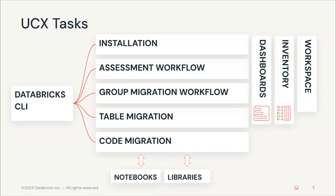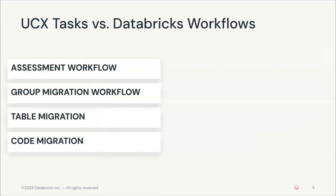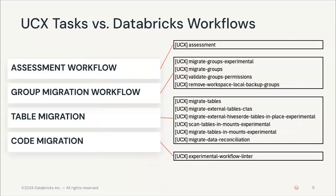UCX will also generate a set of dashboards, which can be used as easy and quick reports to review the assessment results or just to check the progress during the migration. We have the assessment workflow as the first step — the first thing to execute when we install the tool. This is what crawls your workspace, gets the results, saves those on a table, and then that table is used to populate the dashboard. Then we have the group migration, table migration, and code migration workflows, each related to its specific task, with different jobs you can execute to perform changes or validate and mitigate issues in the workspace.